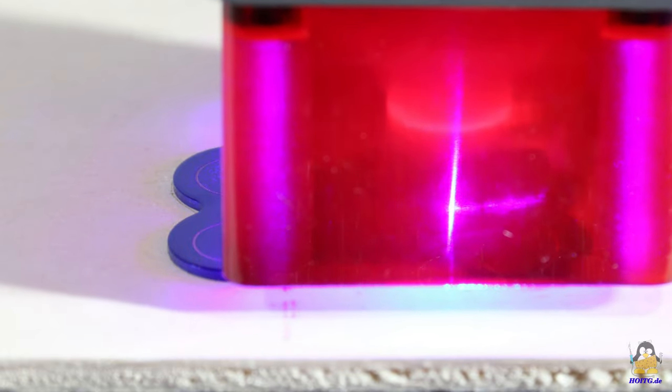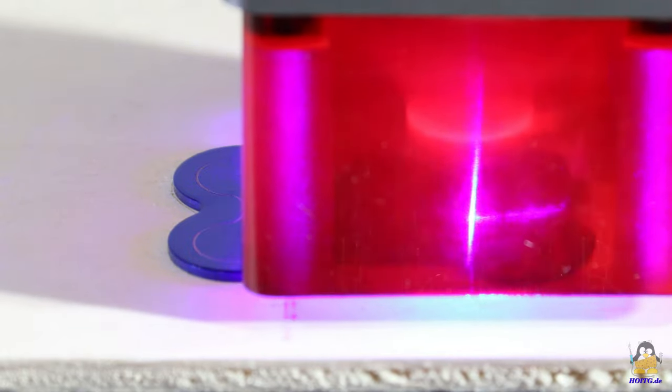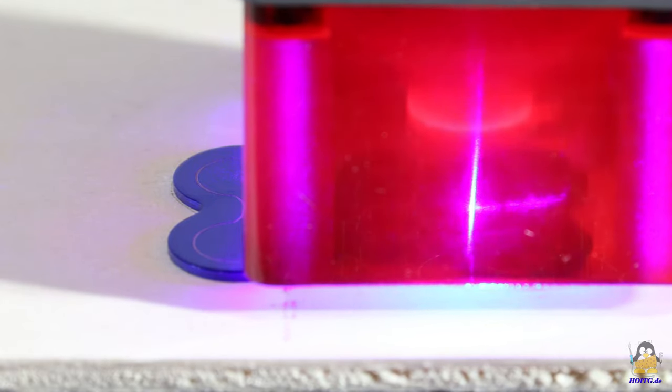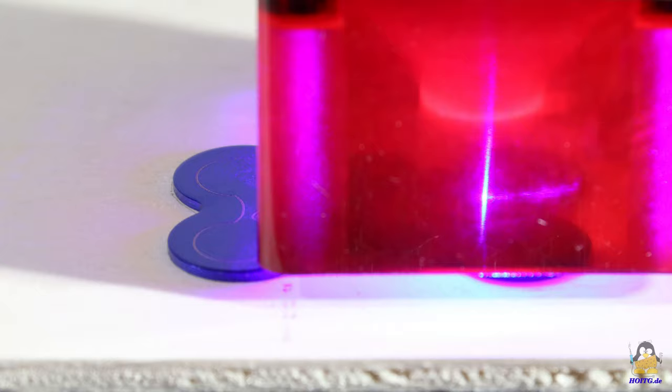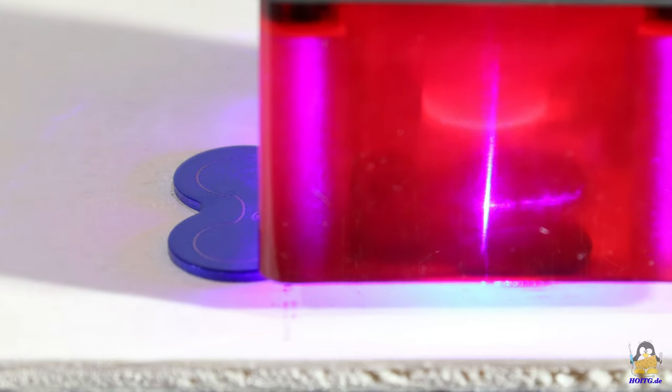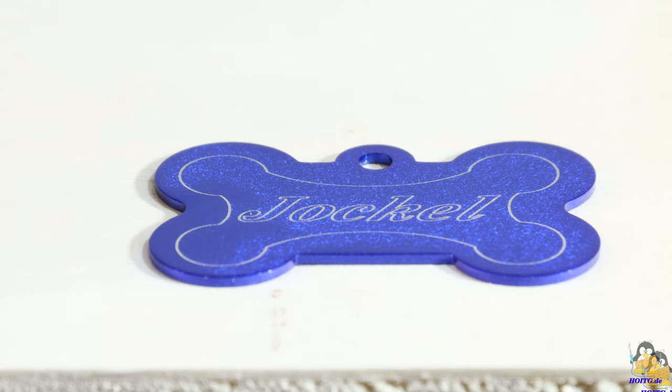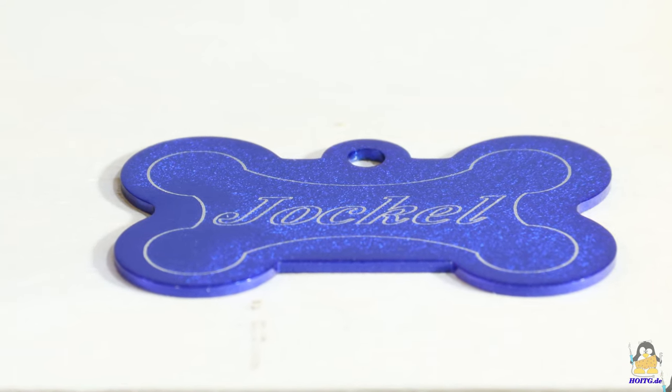Coated aluminum is engraved now. The laser cannot engrave bare aluminum, because this material has a too good thermal conductivity. Only the colored coating is evaporated from the bone shaped aluminum. With that, the engraving is clearly visible.